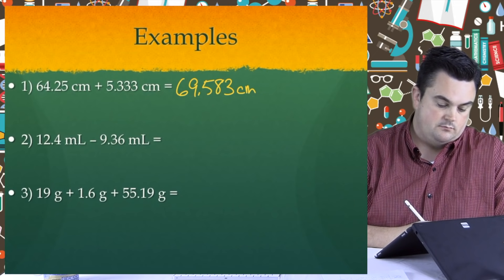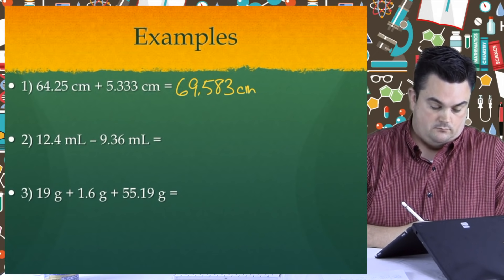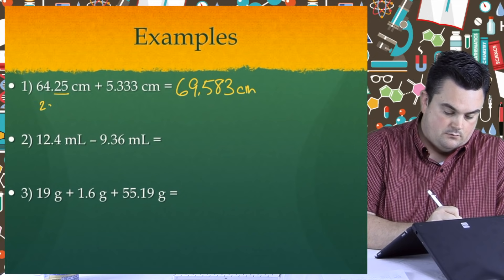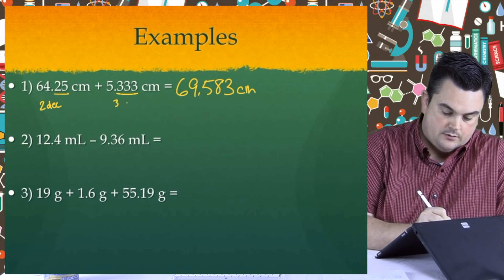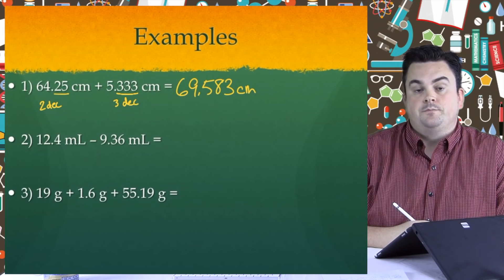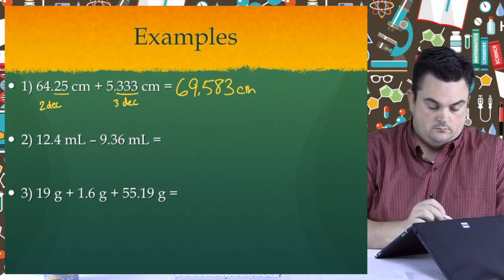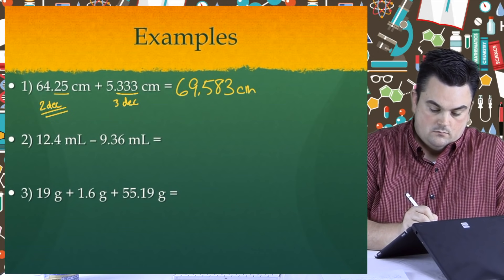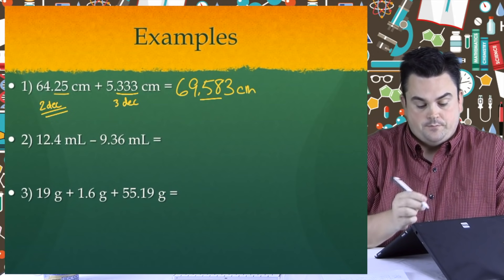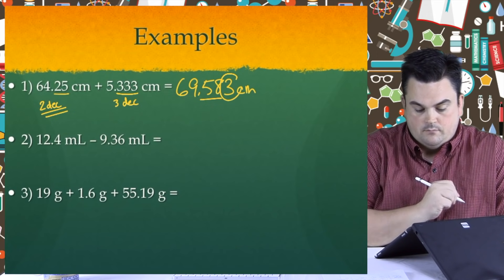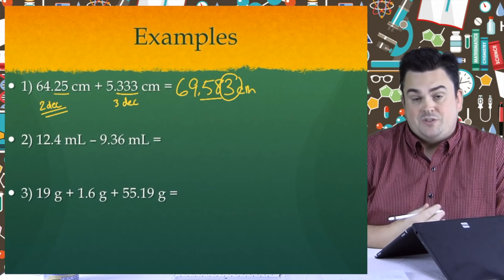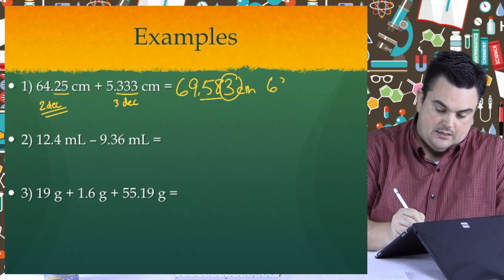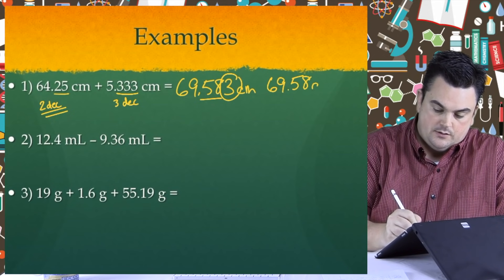We're going to look at our two measurements and determine how many decimal places each one has. The first measurement has two decimal places, and the second has three. We are limited by the less accurate measuring device, so we round to two decimal places. Underlining two decimal places and using the next-door-neighbor method, we circle the three — since it's less than five, we drop it and keep the eight. Final answer: 69.58 centimeters.